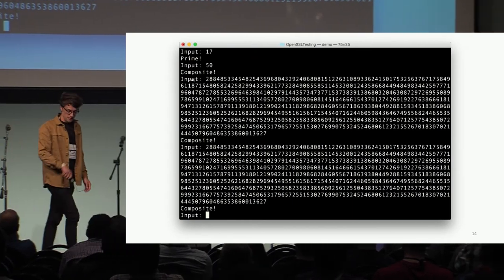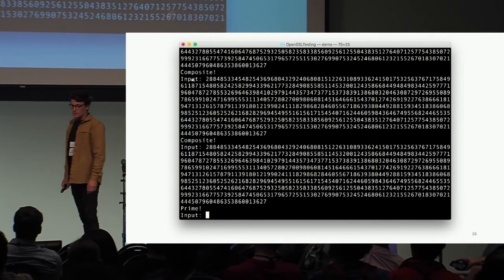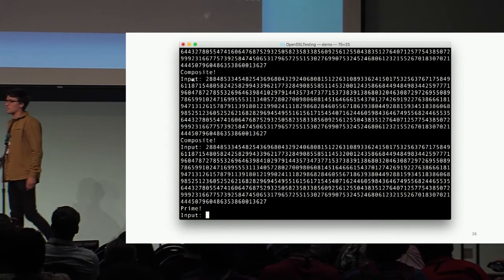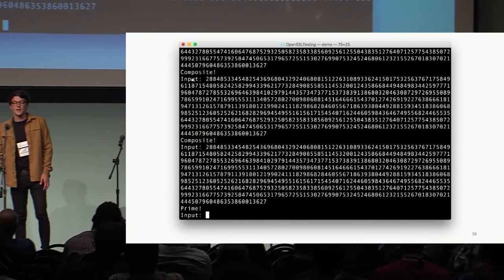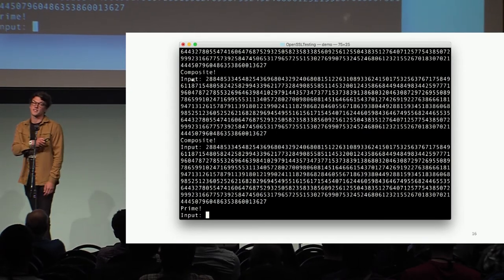So the error rate was 2^-80, right? Let's try it one more time and see what happens. Okay, nice. This time it actually declared it prime. This is pretty interesting. In fact, we got a little bit lucky here, but OpenSSL will incorrectly classify this composite number as prime one in 16 times.